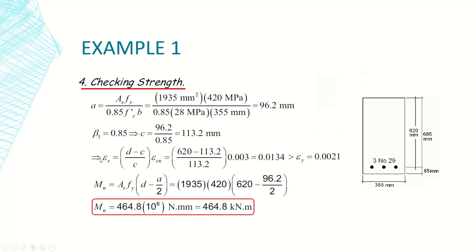With known values of d, c, and ε_cu = 0.003, the steel strain is ε_s = 0.0134. The yield strain ε_y = f_y / E_s. Since ε_s > ε_y, the steel has indeed yielded, confirming that f_s = f_y = 420 MPa.